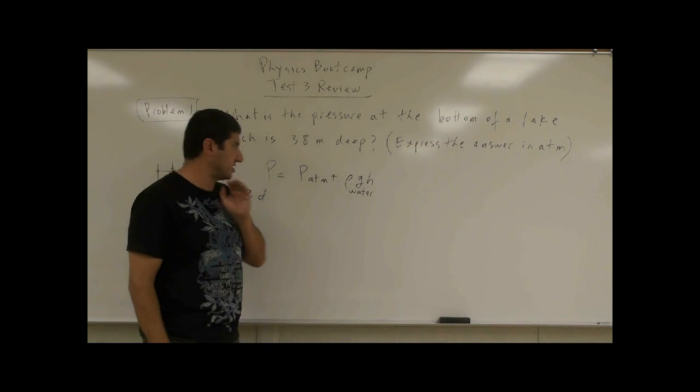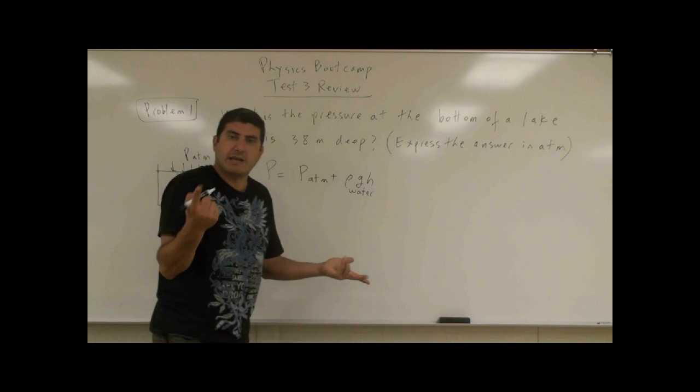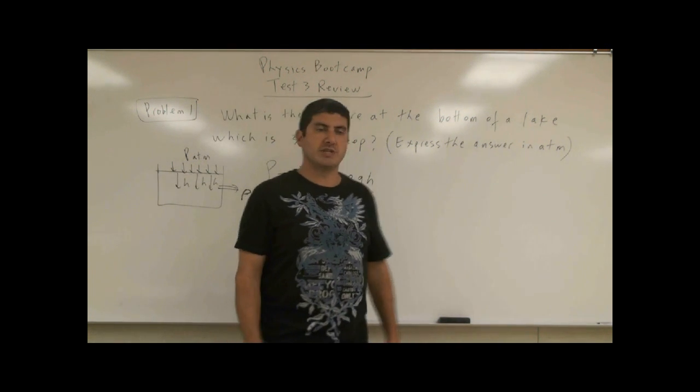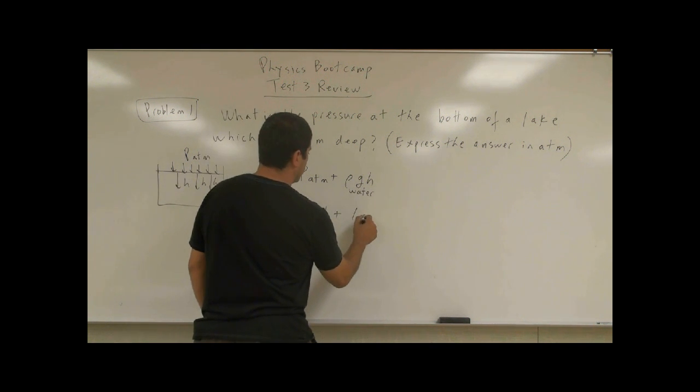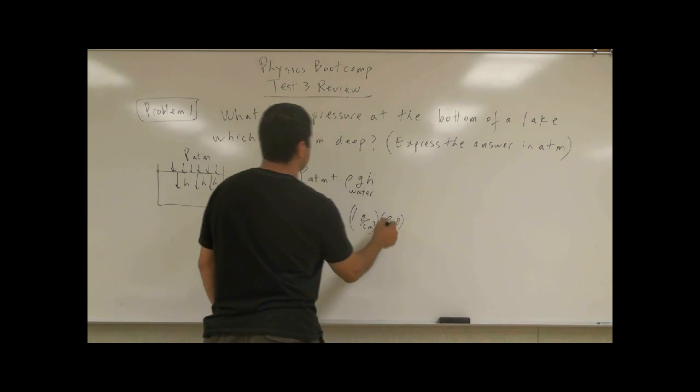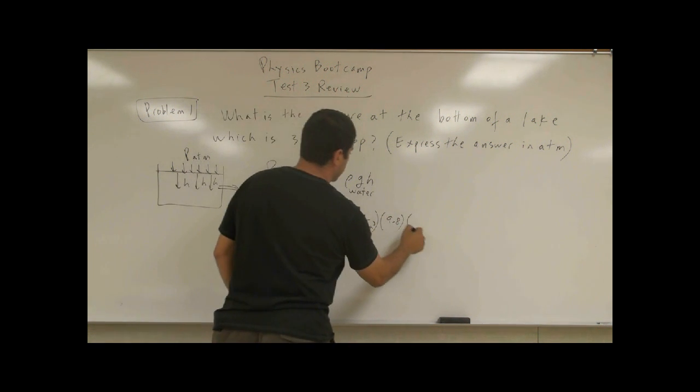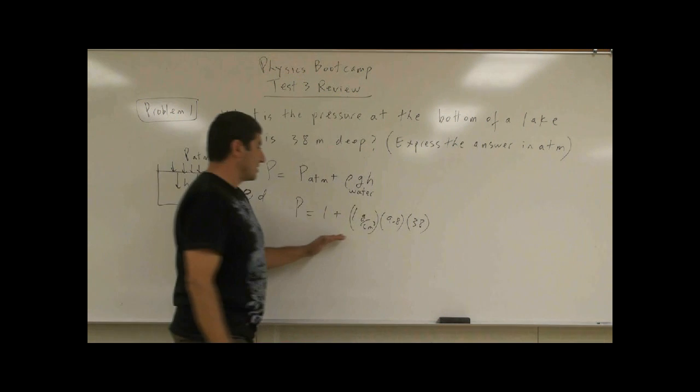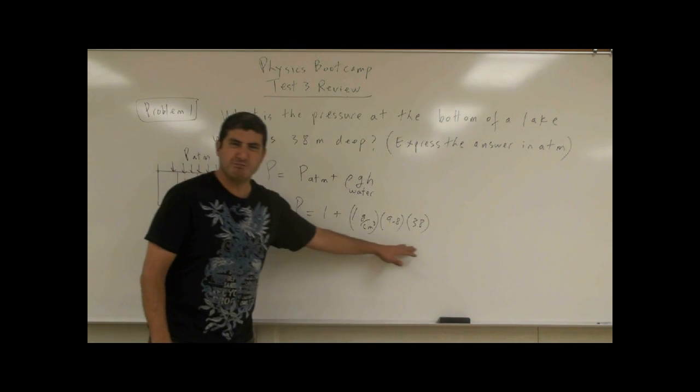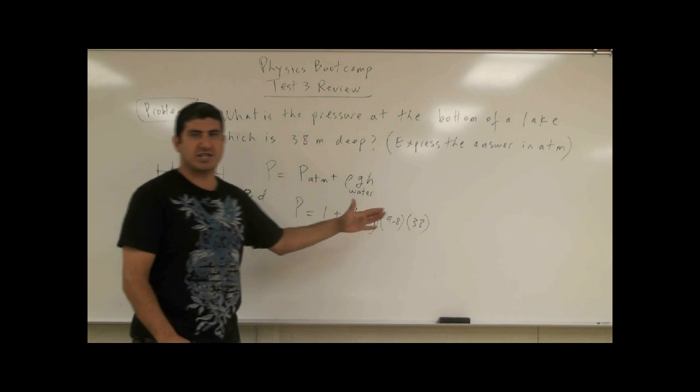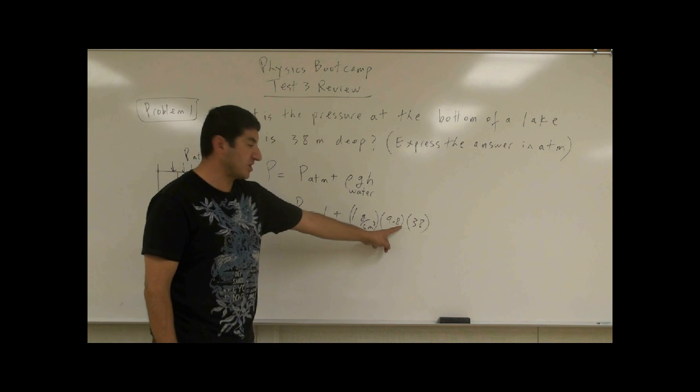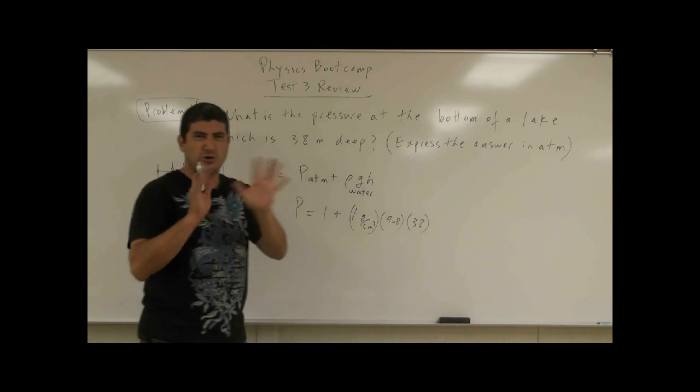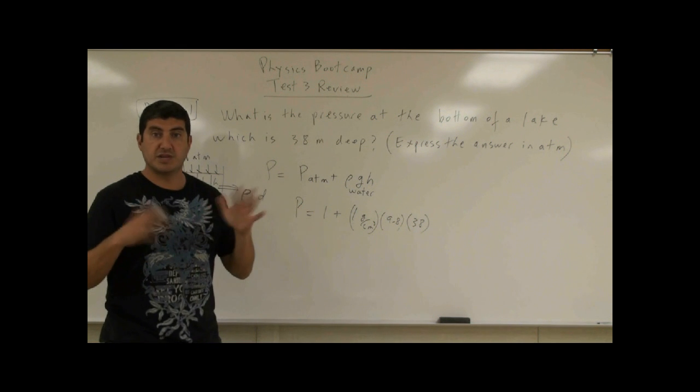Now, the tricky part about this is atmospheric pressure is one atmosphere, but you can't put one atmosphere. You can't put in your equation one plus density of water, one gram per cubic centimeter, g is 9.8, and then the height is 38. The densities, the units will all get mixed up here. You will not get the right answer. This is in units of atmospheres, this is gram per cubic centimeter, this is meter per second squared, this is meter. It all will get mixed up.